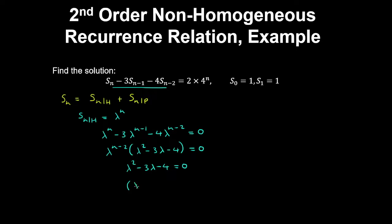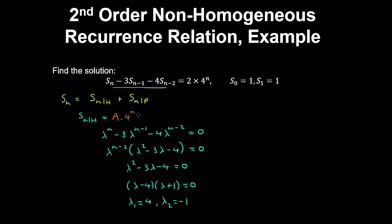We can factorize this equation as (λ minus 4)(λ plus 1), so the roots are λ₁ = 4 and λ₂ = -1. Therefore the homogeneous solution is a constant times 4ⁿ plus another constant times (-1)ⁿ.